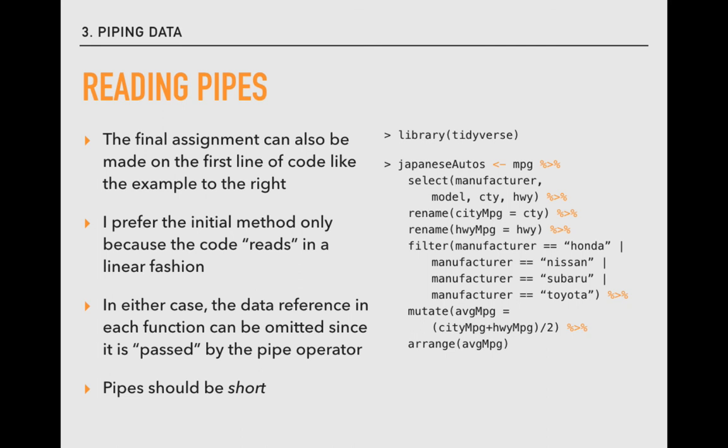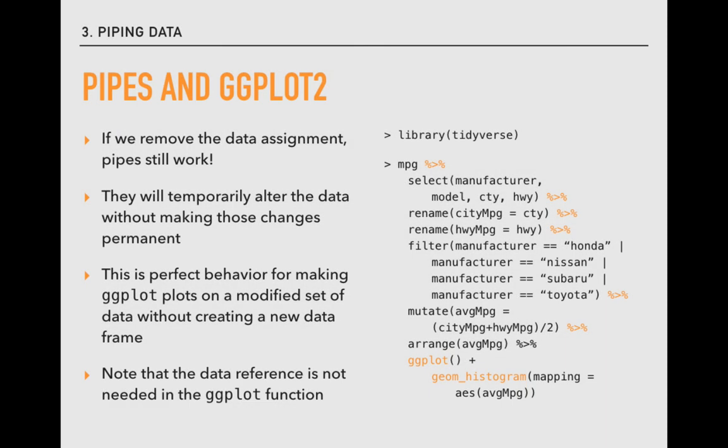Tidyverse functions are pipeable in the sense that if they are included in a chain of functions, they do not need the data reference after that first time. This is not true for all functions, so beware of base R functions that may throw errors when the data frame is omitted in a pipe set of functions. Also note that pipes should always be short. We don't want to see chains of functions that are 30 and 40 lines long. Finally, I want to highlight that ggplot2 functions can be built into pipes as well. If you only need to make changes that are temporary to produce a particular plot, it isn't even necessary to assign those changes to a data frame. Simply allow them to remain temporary with the final plot the only saved manifestation of your piped functions changes.